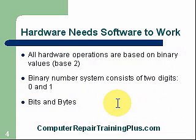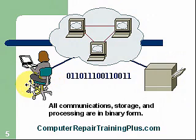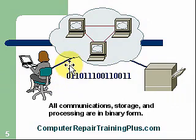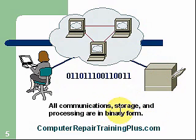Here you can see a lady sitting at her computer. We have a network and a printer. As she types, she's actually creating ones and zeros. Those ones and zeros are processed by the computer, which outputs them in a data line. It might reach other computers or get to the printer, and the printer will translate those ones and zeros into characters we can read. All communication, storage, and processing is in binary form. The computer doesn't understand English or any other language — only ones and zeros.